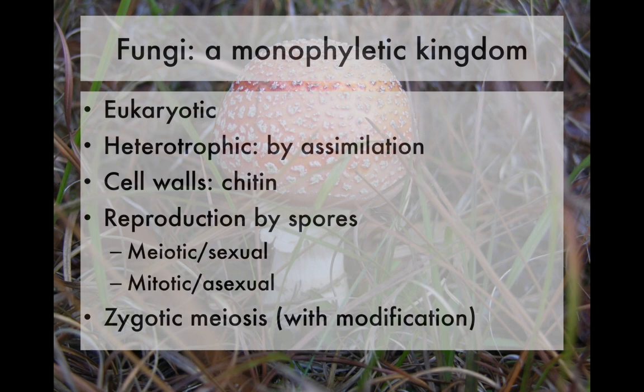The life cycle of fungi is zygotic meiosis, so they're predominantly haploid organisms where the zygote, once formed, undergoes meiosis. There is a little bit of a modification from simply saying they are haploid organisms, and I'll talk about that later when we discuss the different phyla of fungi.